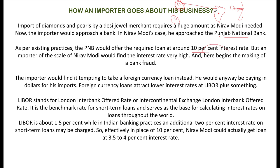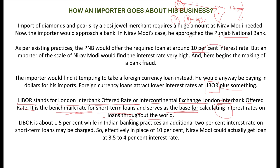Nirav Modi thinks: what if I get a loan from a bank in London, Paris, or some European bank where interest rates are lower? Foreign currency loans always have lower interest rates at LIBOR plus some nominal value. LIBOR stands for London Interbank Offered Rate — also called Intercontinental Exchange London Interbank Offered Rate. It is the benchmark rate for short-term loans and serves as the base for calculating interest rates on loans throughout the world. Let's say a Paris bank offers 3% interest versus PNB's 10%.